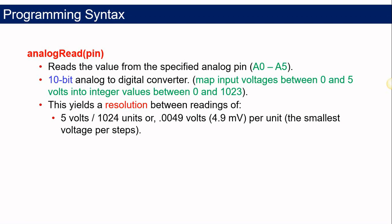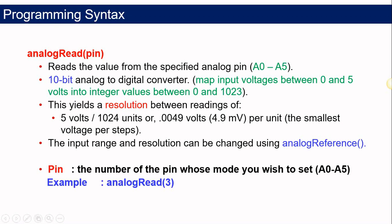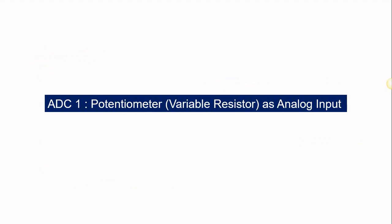As I said before, you can change your voltage reference by using the analogReference() function. Pin in the analogRead function is the number of pin whose mode you wish to set. You can choose between A0 until A5. For example, if you are connecting your sensor to A3, in your function you just can write analogRead(3), meaning that you are going to get the data from the port or from the channel A3.